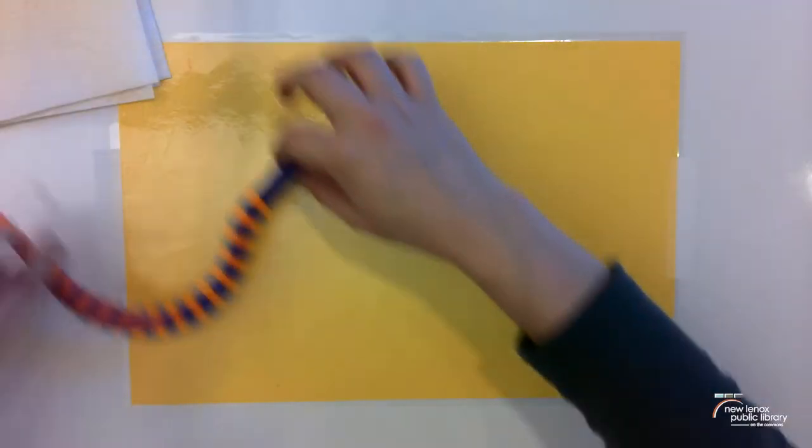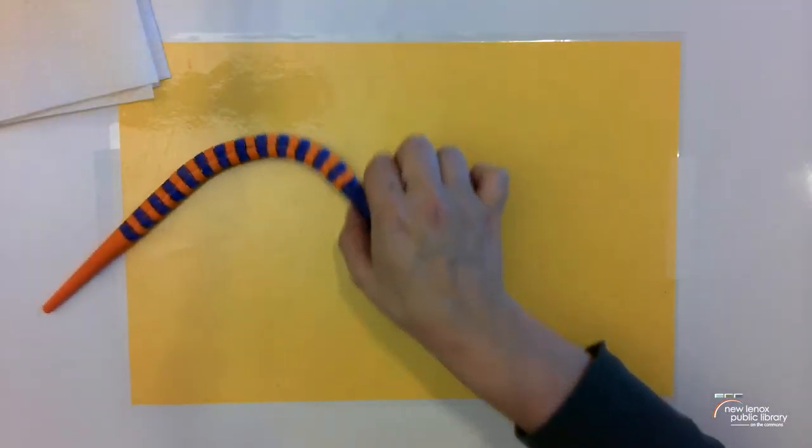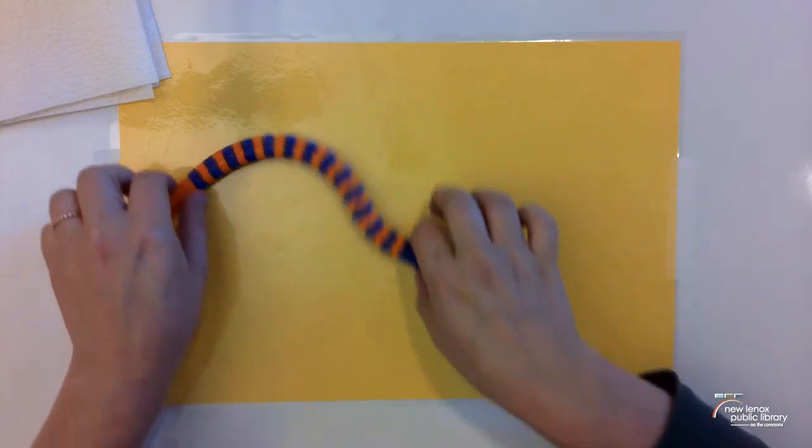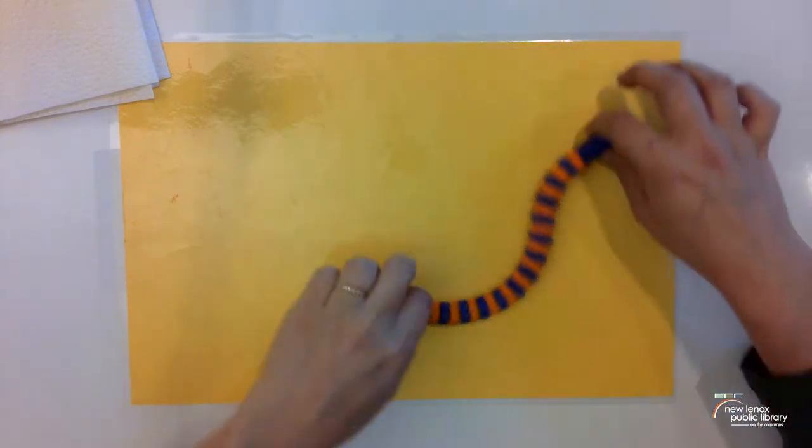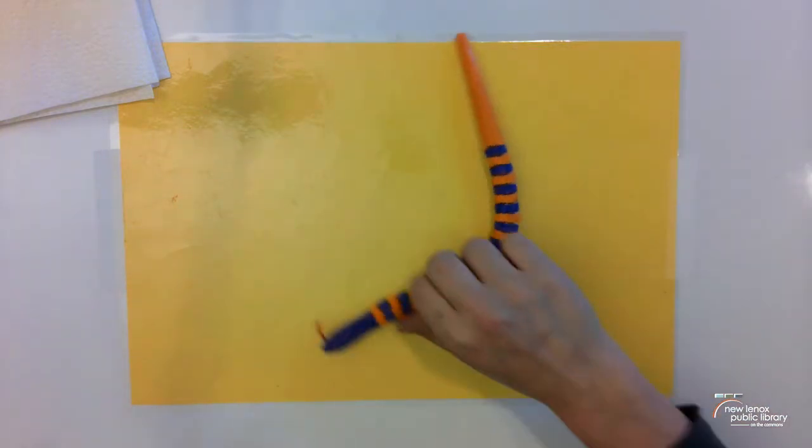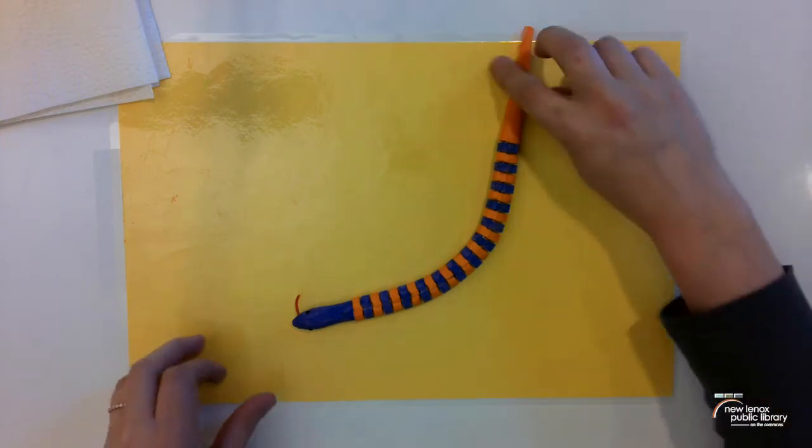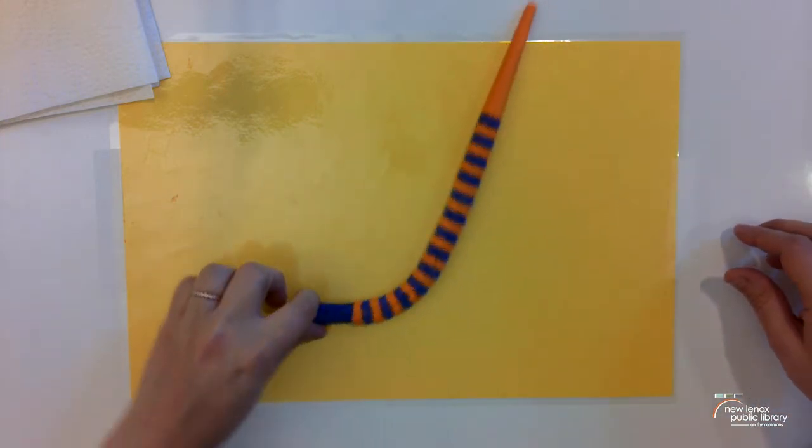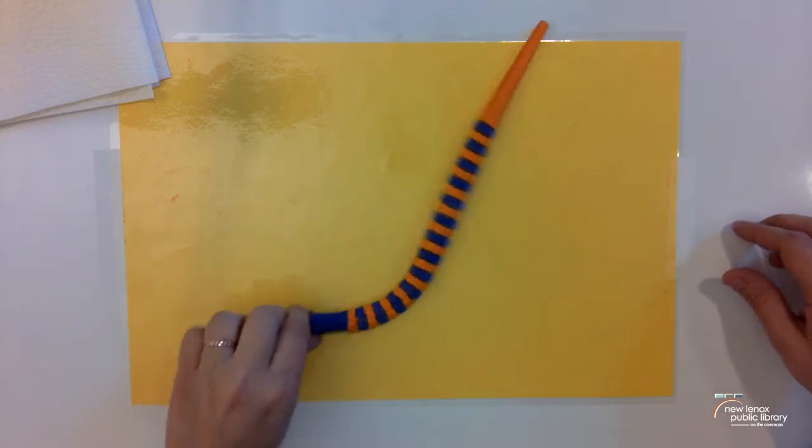Hi everyone! Today for Art Attack we're going to be making these super squiggly snakes. So they're just wooden snakes that we're going to be painting however we would like to. I hope that you really enjoy this craft. Let's get to it.